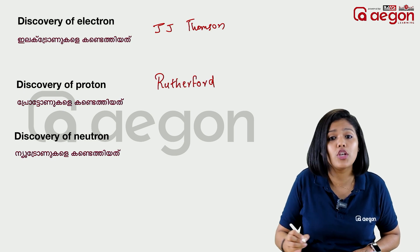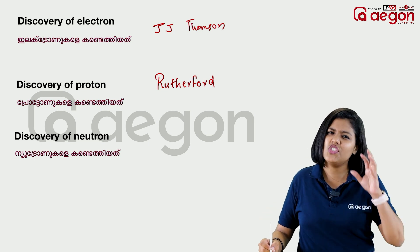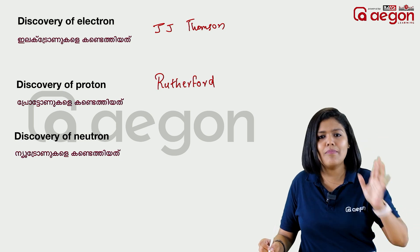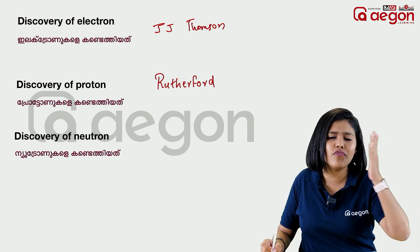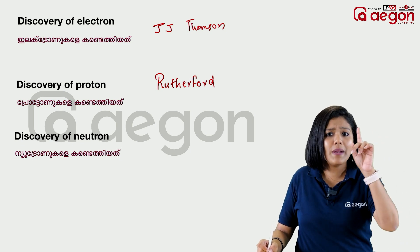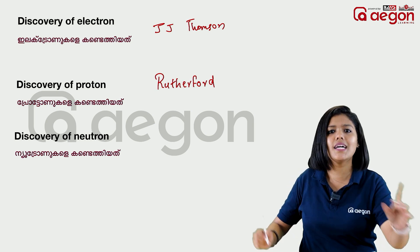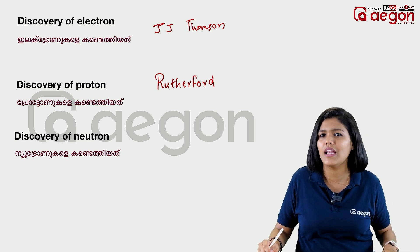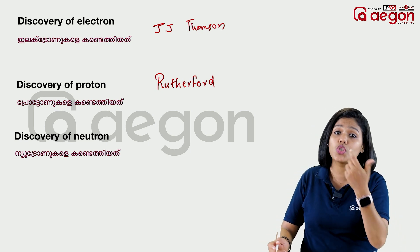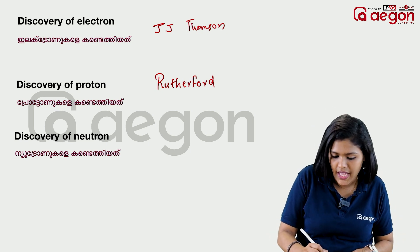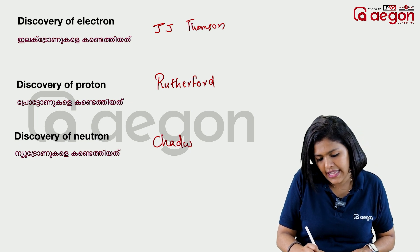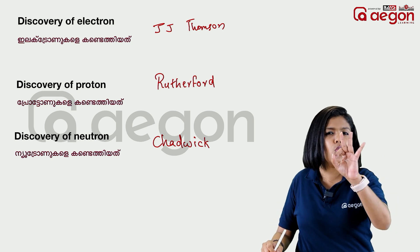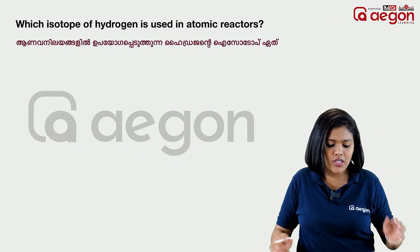Next, who discovered the Neutron? The Neutron was discovered by James Chadwick. This is important for previous year question papers — fill in the blanks and match the following questions. If you know these points, you can get a mark.